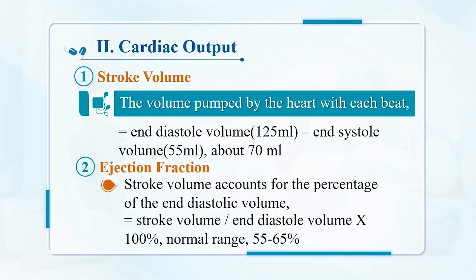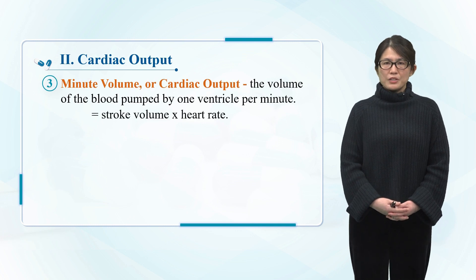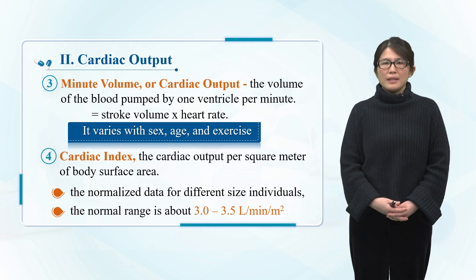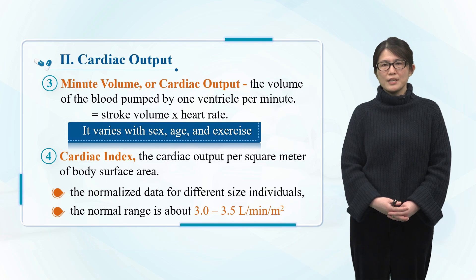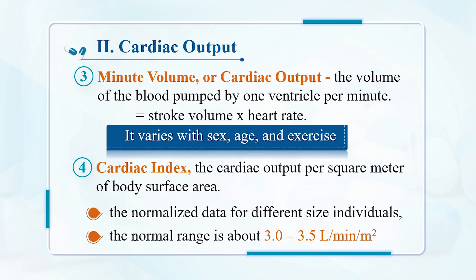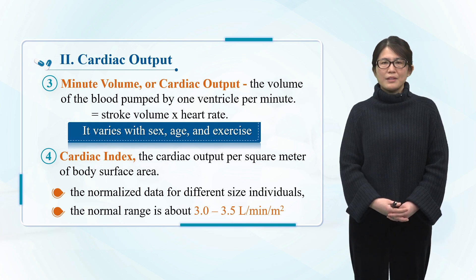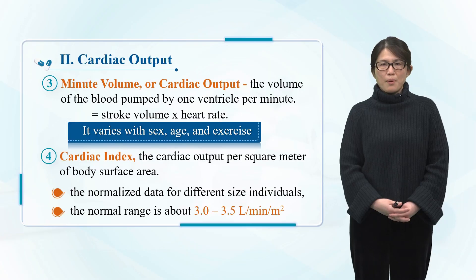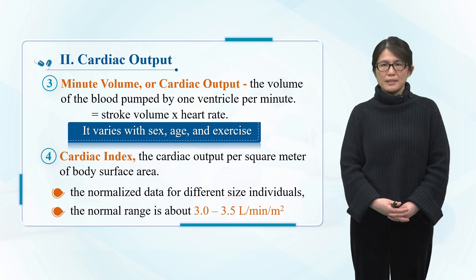The ejection fraction of a healthy adult is 55% to 65%. The amount of blood ejected per minute from one side of the ventricle is called the cardiac output. The cardiac output of the left and right ventricles is basically the same. Cardiac output equals the product of heart rate and stroke volume. Cardiac output adapts to the body's metabolic level. The cardiac output calculated per unit body surface area is called the cardiac index.